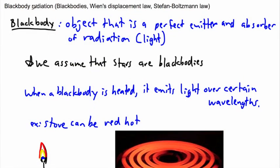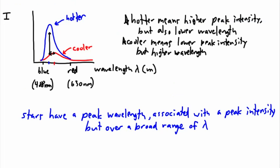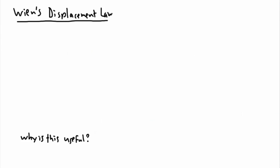We've just been looking at stars as black bodies and talking about this effect: as something is hotter, its peak intensity goes up, but also its peak wavelength goes to lower values — so bluer, so to speak. We can use this. It's called Wien's Displacement Law, and this is actually going to really help us out. We have an equation for this.